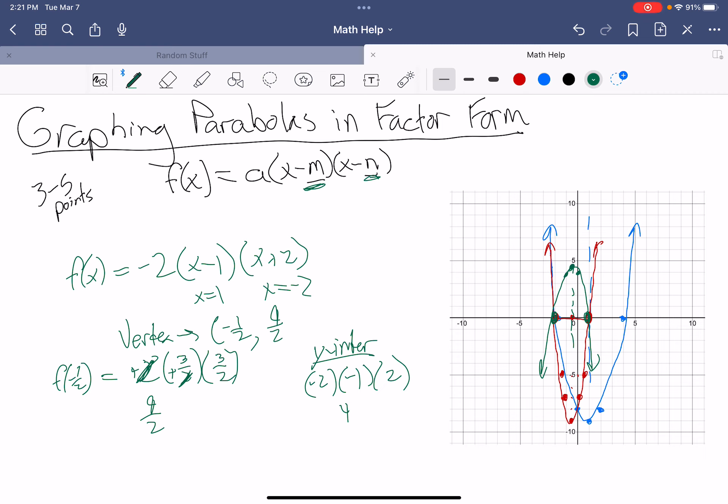This is how we graph parabolas in factor form. One, we start off using this information right here to get our roots, our x-intercepts. After that, the tricky part is being able to split the difference, going halfway between them, wherever that is, and using that value to help us find the vertex. After that, we could use the A trick, we could find the y-intercept, and use the axis of symmetry to help us find some other points. Hopefully this has been helpful. Let me know if you have any questions, and good luck on your work.